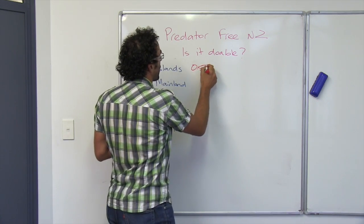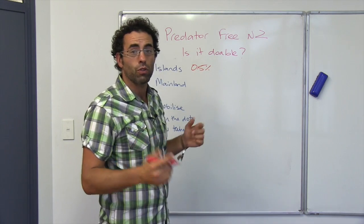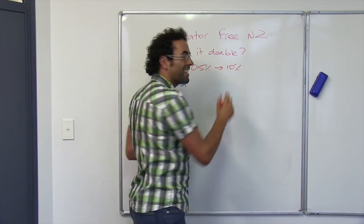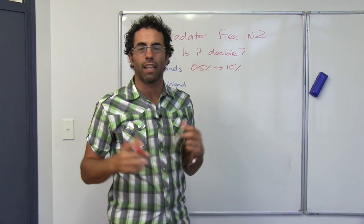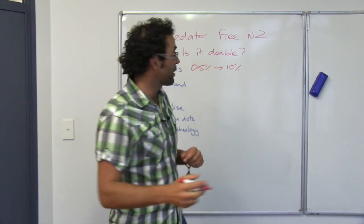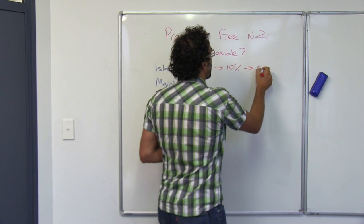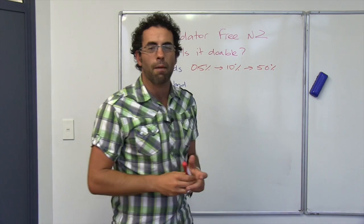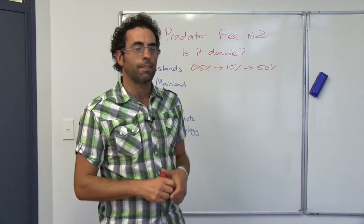Since then, back then we had about 0.5% of our offshore islands done. Since then, in the 50 years, it's grown to about 10% of our offshore islands are now Predator Free. And with some of the projects in the pipeline, such as Predator Free Rakiura, who knows, in the next couple of decades that might ramp up to 50%.